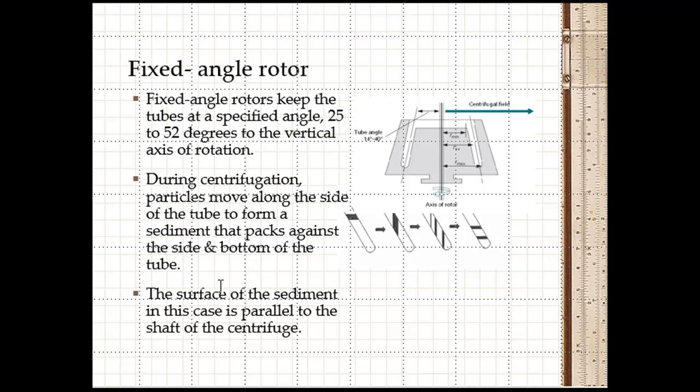Fixed angle rotor is widely used to keep the tube at a fixed angle, 25 to 52 degrees to the vertical axis of rotation. During centrifugation, particles move along the side of the tube to form a sediment that packs against the wall. The surface of the sediment in this case is parallel to the shaft of the centrifuge.